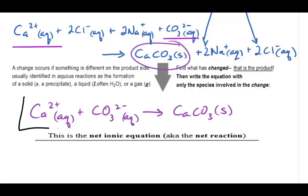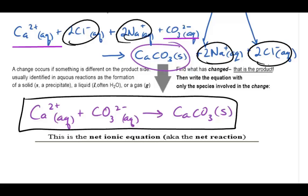This is the net ionic equation, also known as the net reaction. Notice that the sodium ions and chloride ions have remained unchanged, so those are spectator ions and are not participating in the reaction, and so they are left out of the net reaction.